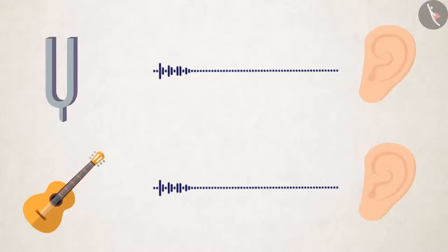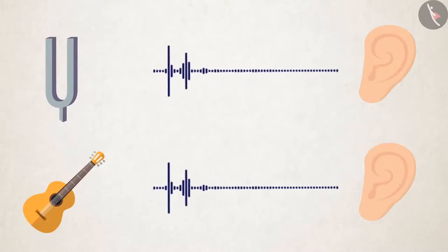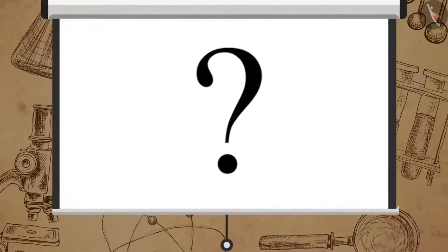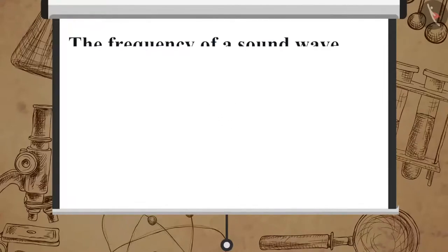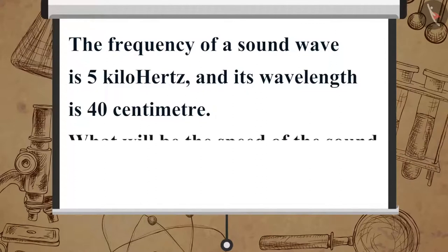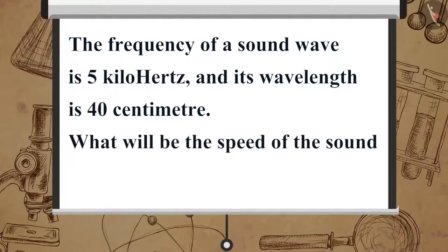The speed of sound in a given medium remains the same for all frequencies under the same physical conditions. Now let us solve a simple question. Suppose the frequency of a sound wave is 5 kilohertz and its wavelength is 40 centimeters. What will be the speed of the sound wave?